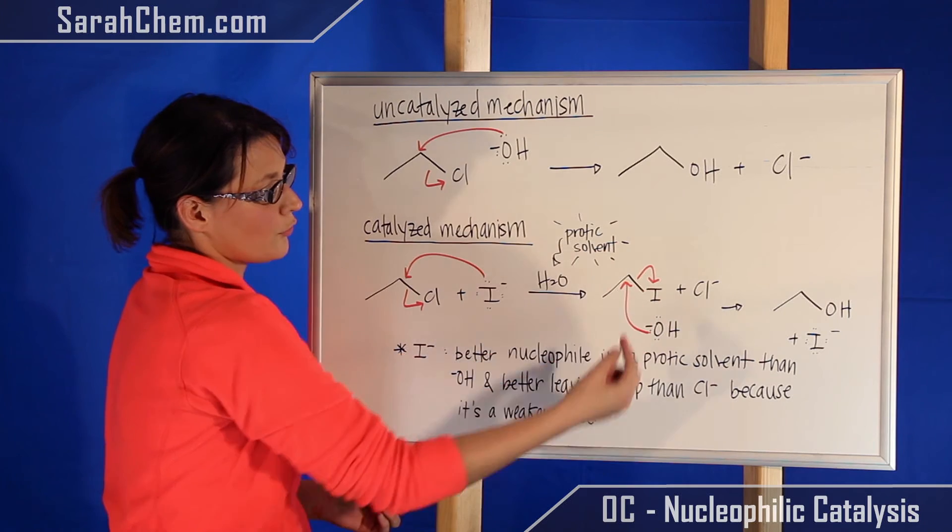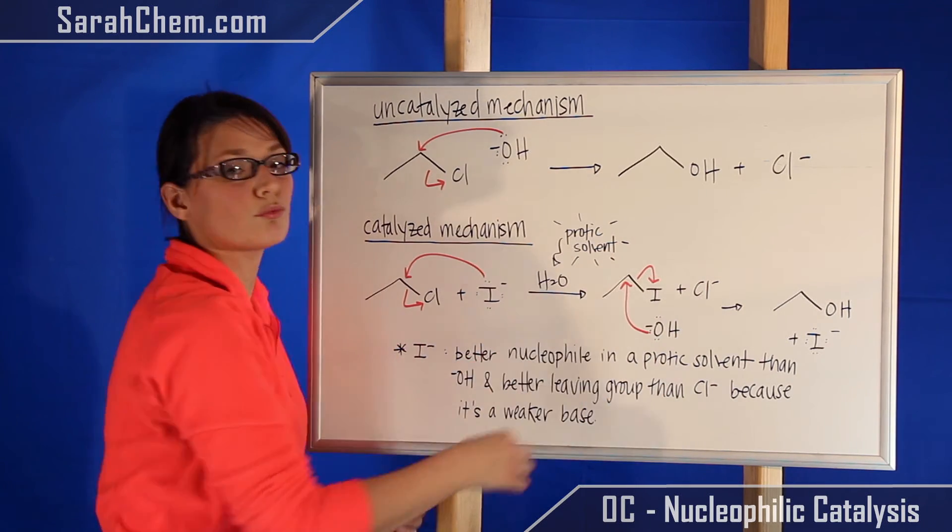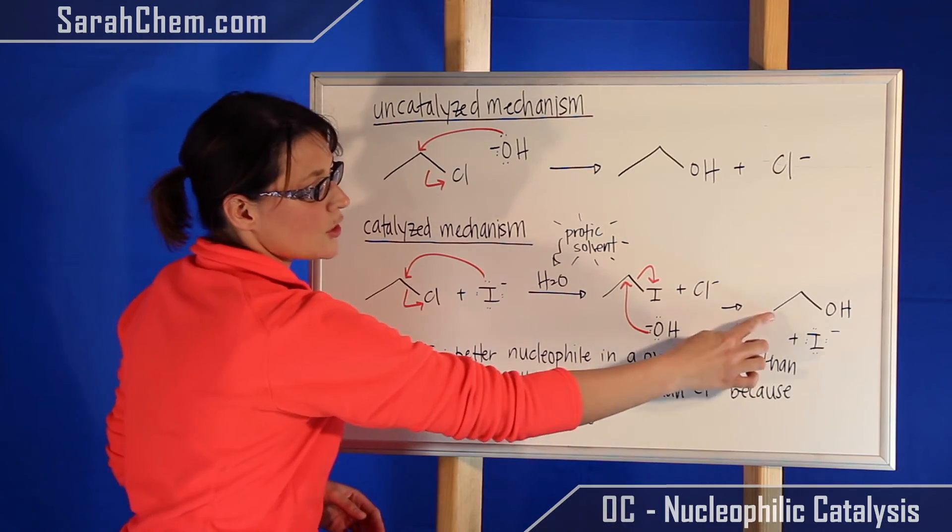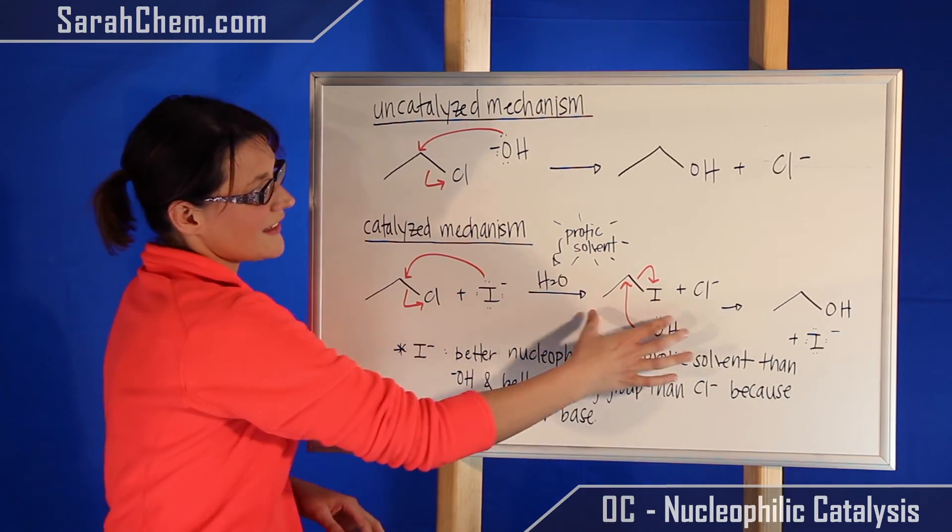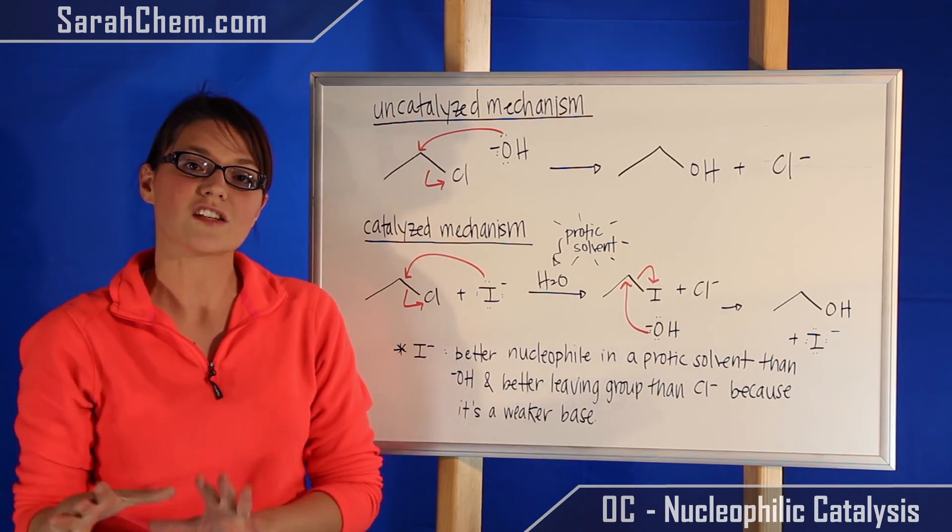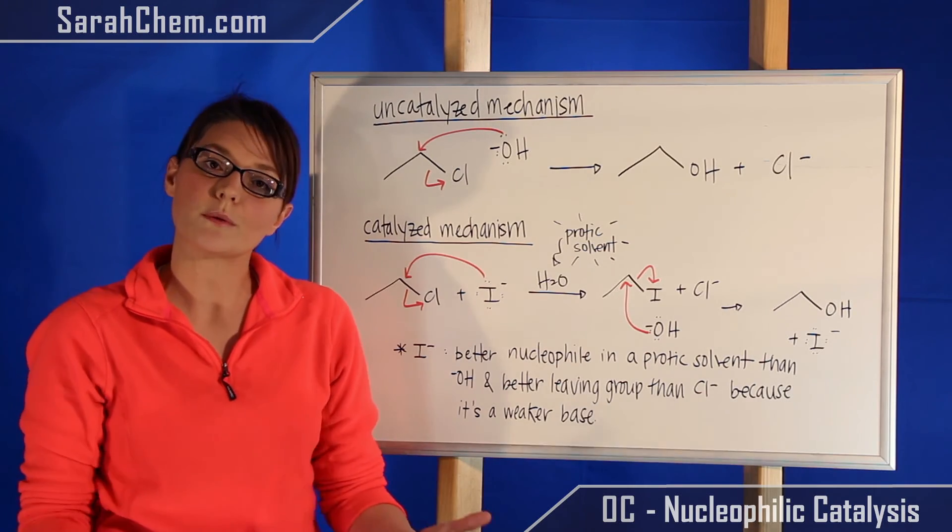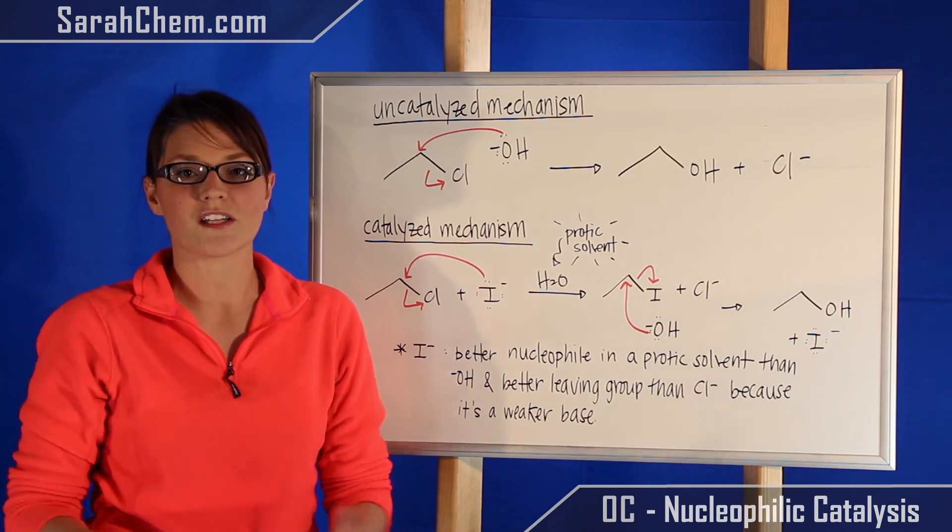So now that we have a much easier group to deal with, hydroxide can come, attack this position and very readily kick off the iodide. So we form our final products. So by creating this new step here that was not in the first mechanism, we've created an easier route for the hydroxide to come and attack our compound. So this would be an example of covalent or nucleophilic catalysis.